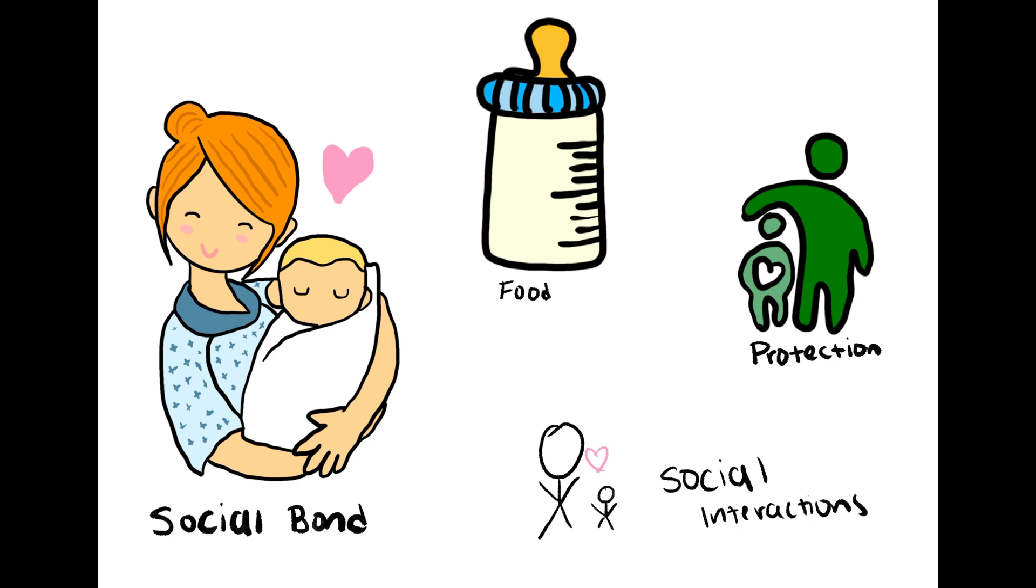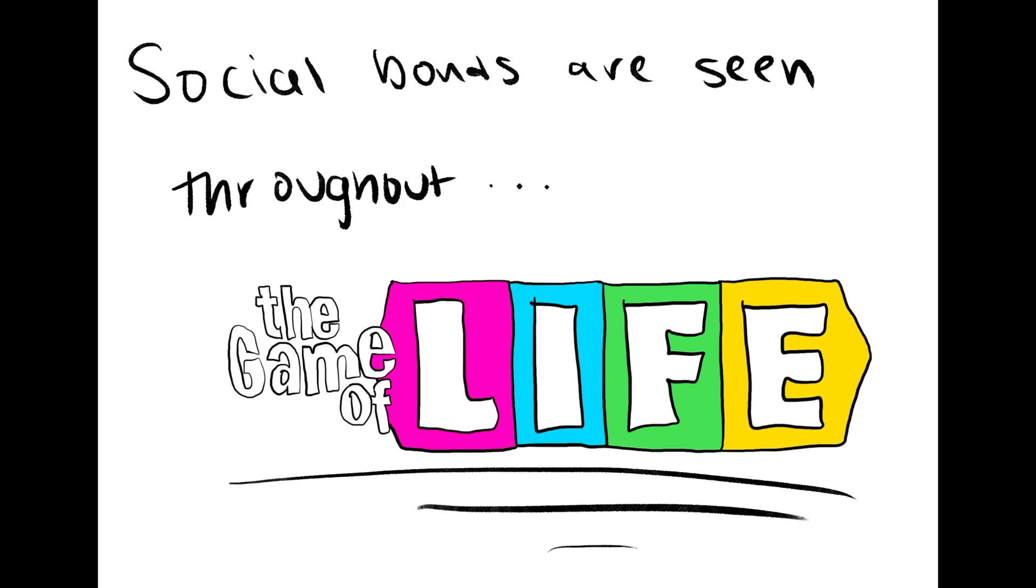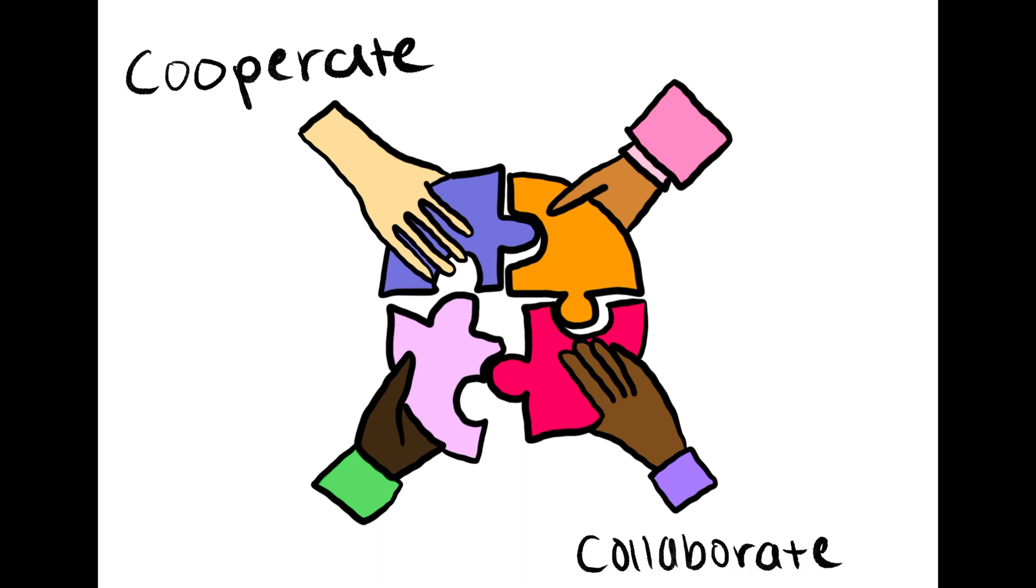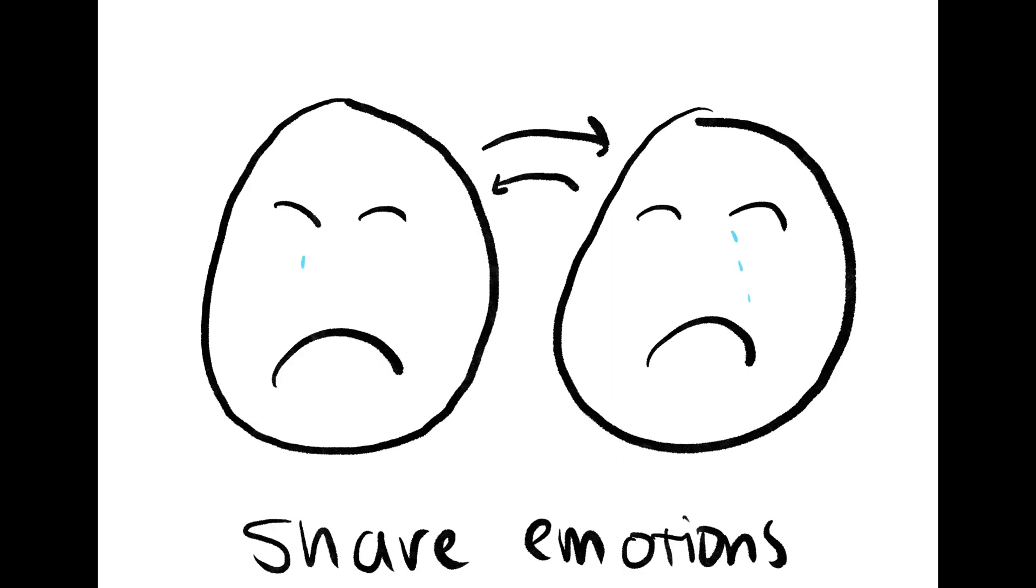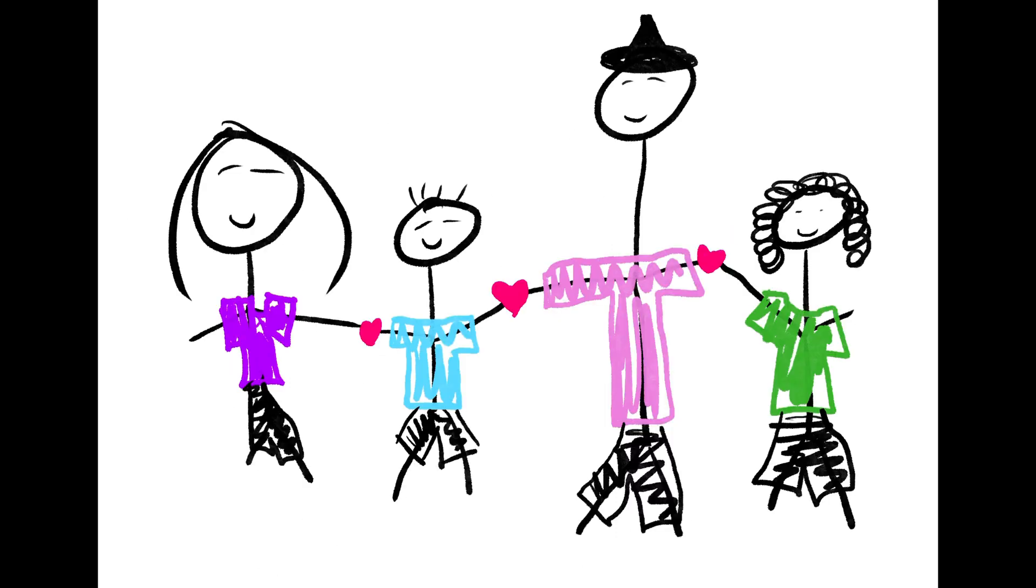These social bonds don't stop when we become self-sufficient. Social bonds are seen throughout life in friends, coworkers, and life partners. We cooperate and collaborate to achieve common goals that we could not achieve alone. We communicate and share emotions and experiences, and we form support systems to rely on in times of need.